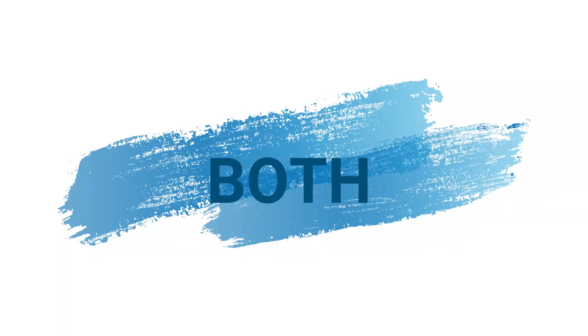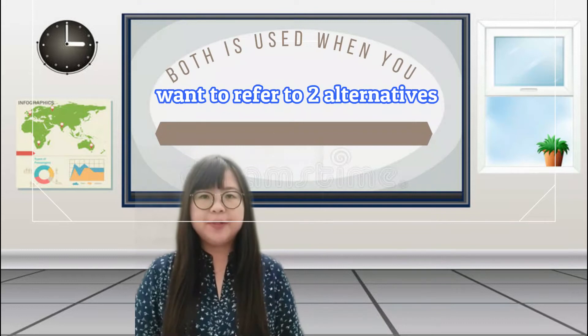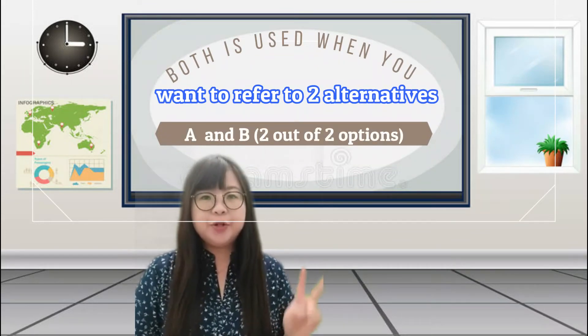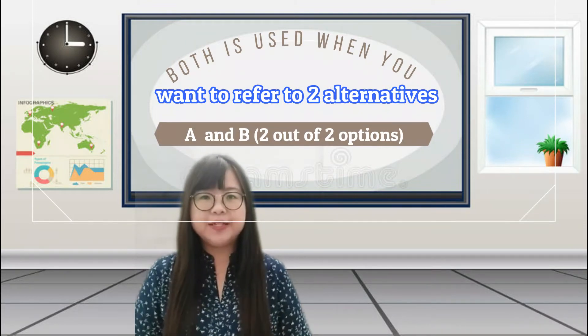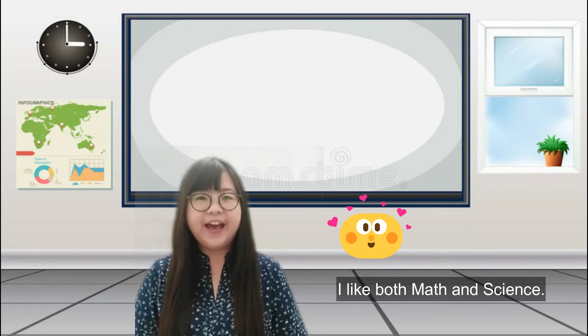Let's talk about the first word, which is both. Both is used when you want to refer to two alternatives, A and B, or we can say two out of two options. For example, when you want to say 'I like both Math and Science,' you're saying that you like Math and you also like Science.